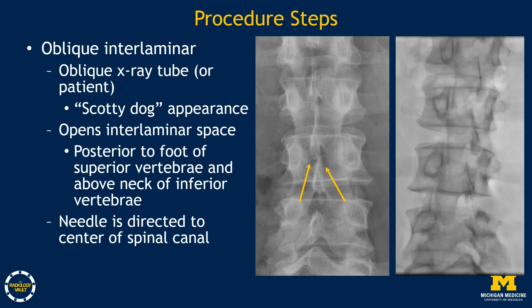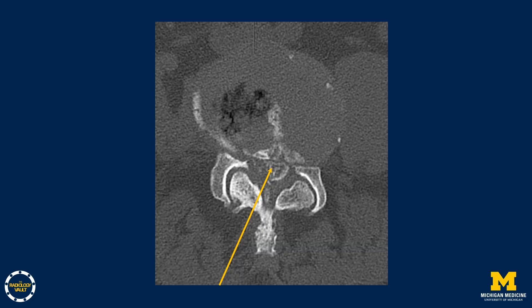Many neuroradiologists prefer the oblique interlaminar approach, where the x-ray tube or patient is oblique such that the lumbar vertebrae show the Scottie dog appearance. This opens the interlaminar space. This space is located posterior to the foot of the Scottie dog of the more superior vertebrae and above the neck of the Scottie dog of the more inferior vertebrae. With this approach, the needle is directed to the center of the spinal canal, with greater likelihood of the needle being directed towards and into the thecal sac.